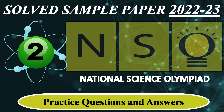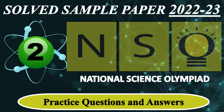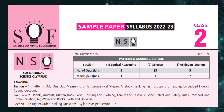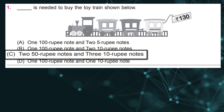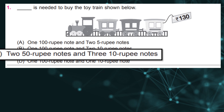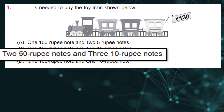NSO National Science Olympiad latest sample paper for Grade 2. How much money is needed to buy the toy train shown below? The answer is 250 rupee notes and 310 rupee notes.